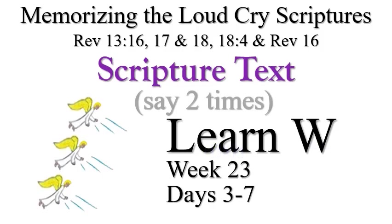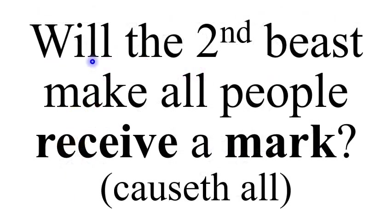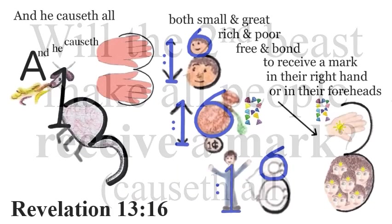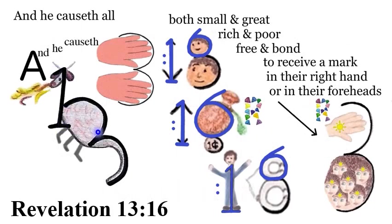Learn W. Will the second beast make all people receive a mark? Causeth all. Revelation 13:16. And he causeth all, both small and great, rich and poor, free and bond, to receive a mark in their right hand or in their foreheads.